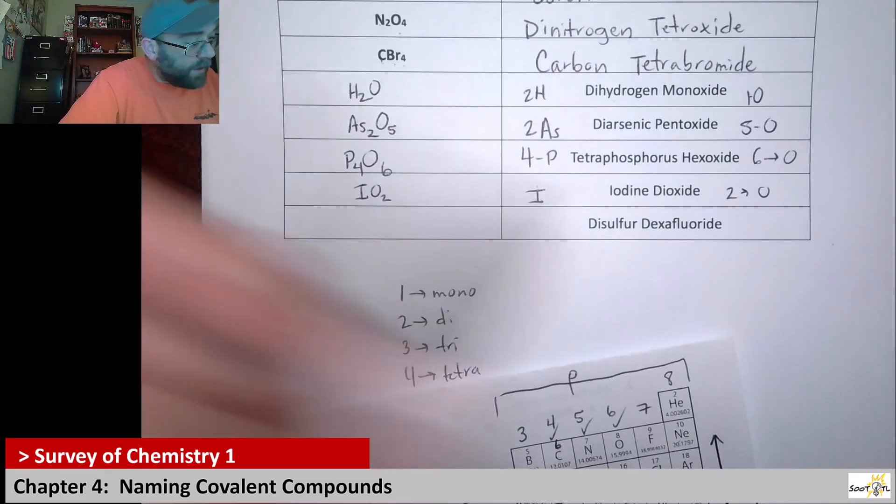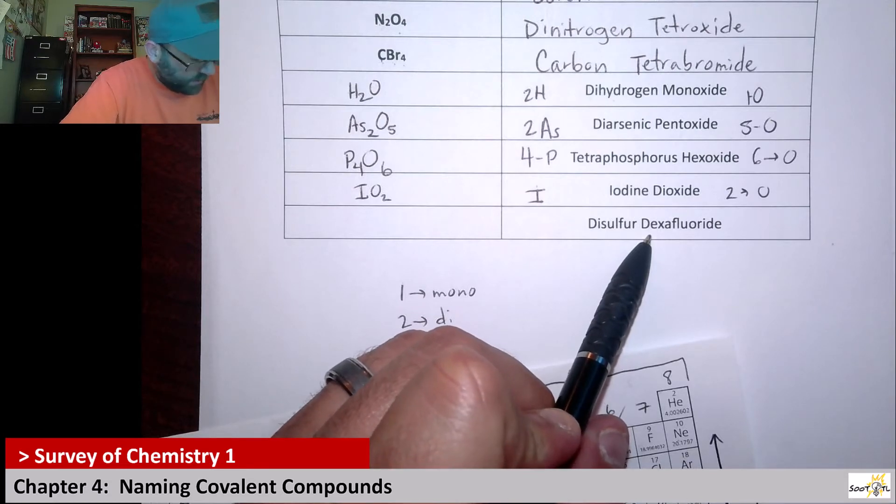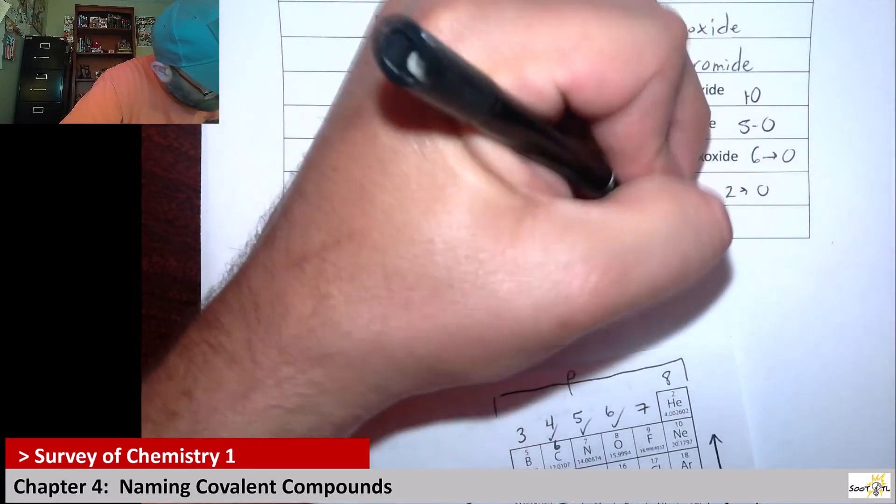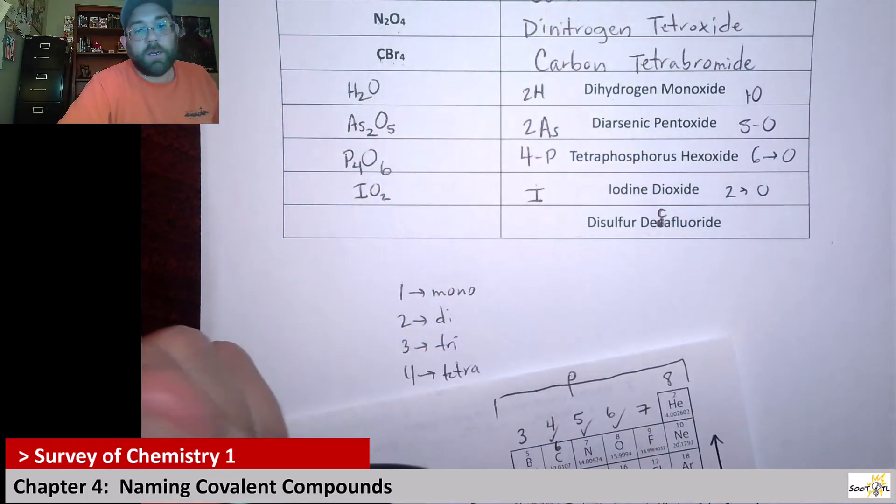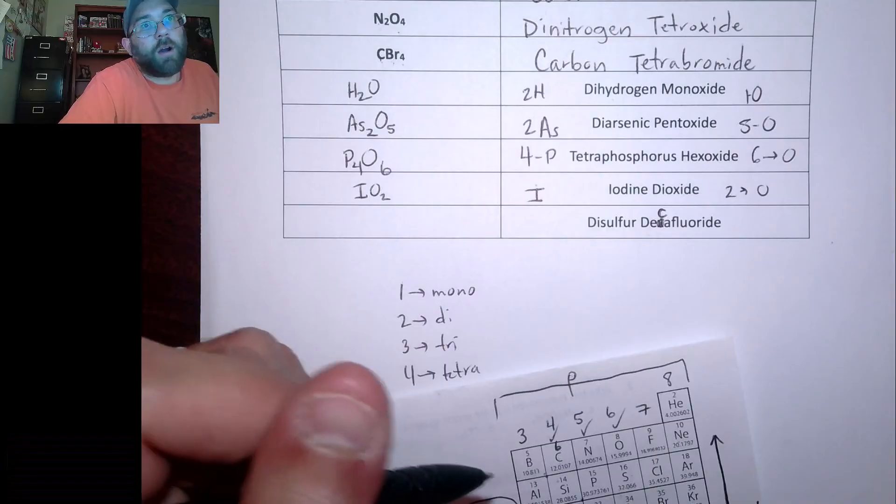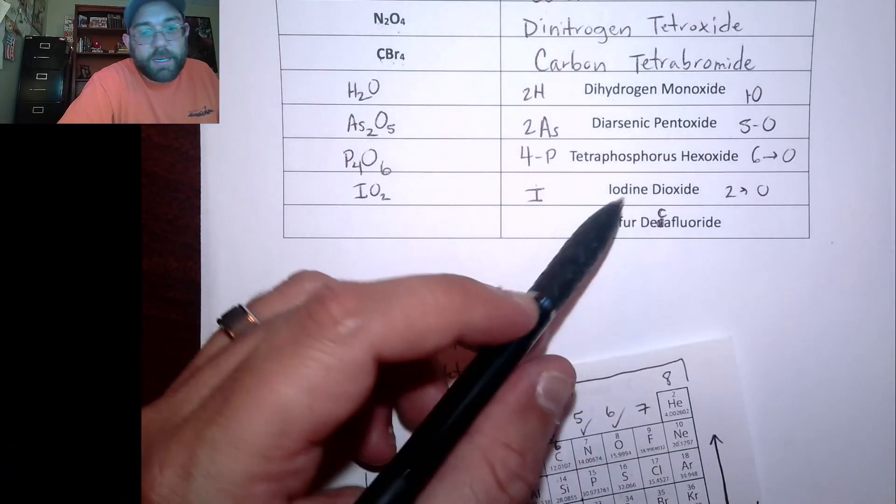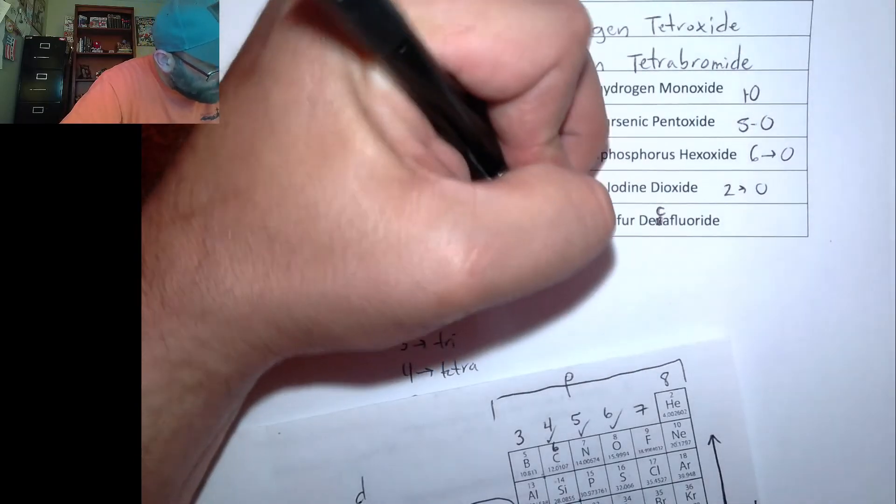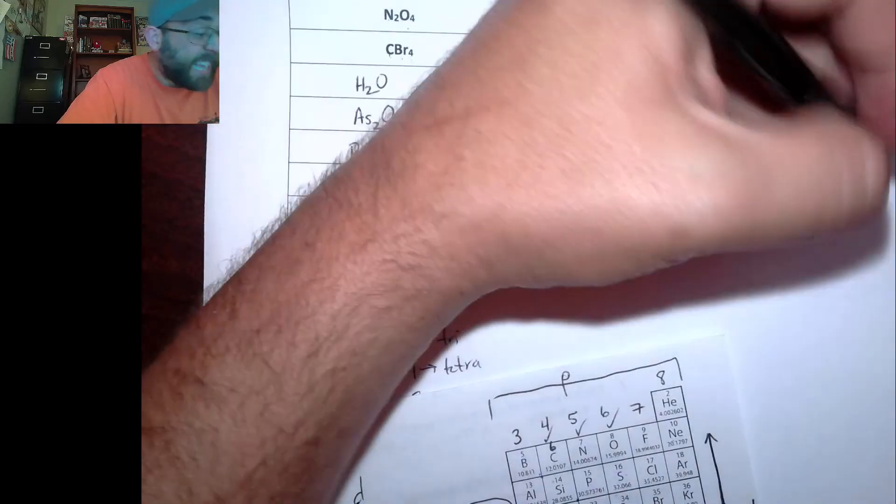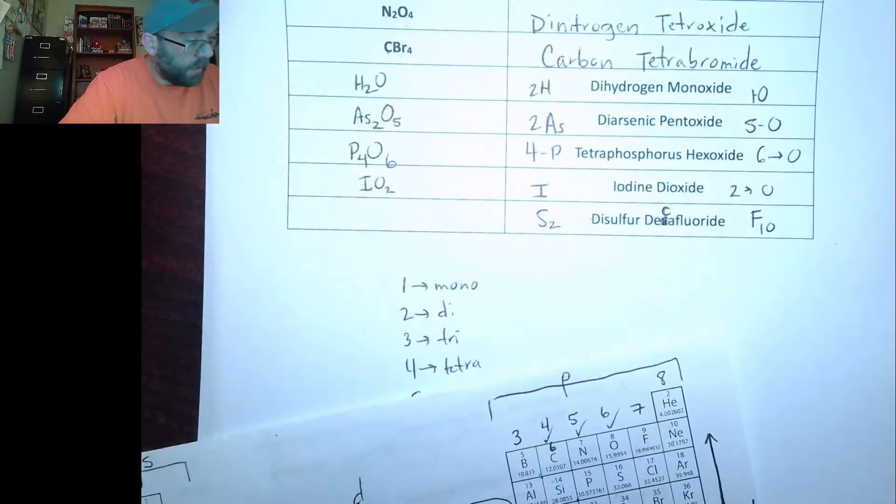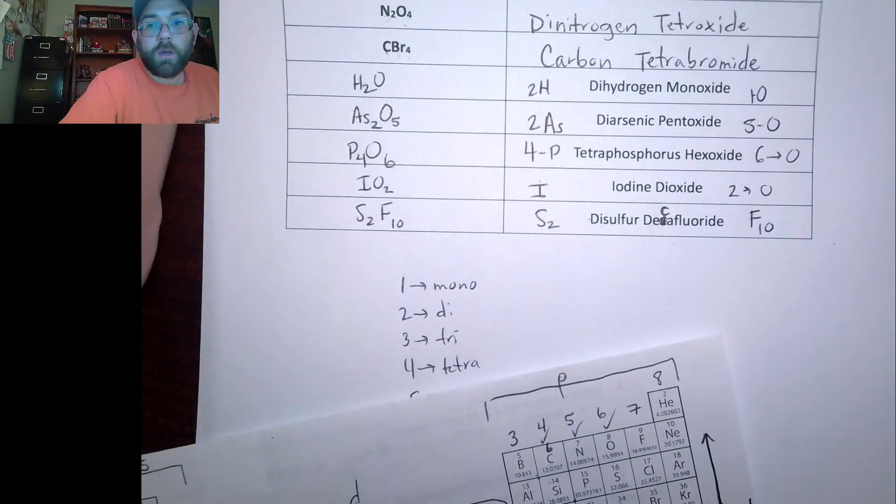Alright. Next up we have disulfur deca. Deca. Deca? It's supposed to be deca. That's a typo. It's supposed to be C. Sorry. Disulfur decafluoride. I think Word auto-corrected it for some reason. Alright. Disulfur decafluoride. So this would be di is 2. So there's two sulfurs. And then fluorides with deca means there's 10. So it would be F10. Oh, that's a lot. So S2F10. Like so.